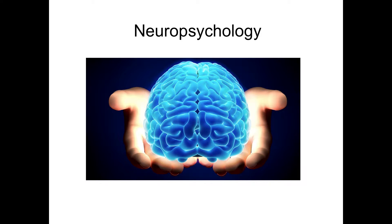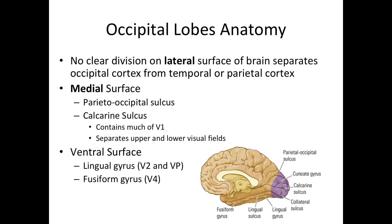Hi everyone and welcome back to Neuropsychology. Today we are going to talk about the occipital lobes. As you guys know by now, the occipital lobes are very important for visual processing. Information that comes into the eyes will be processed largely in our occipital lobes.